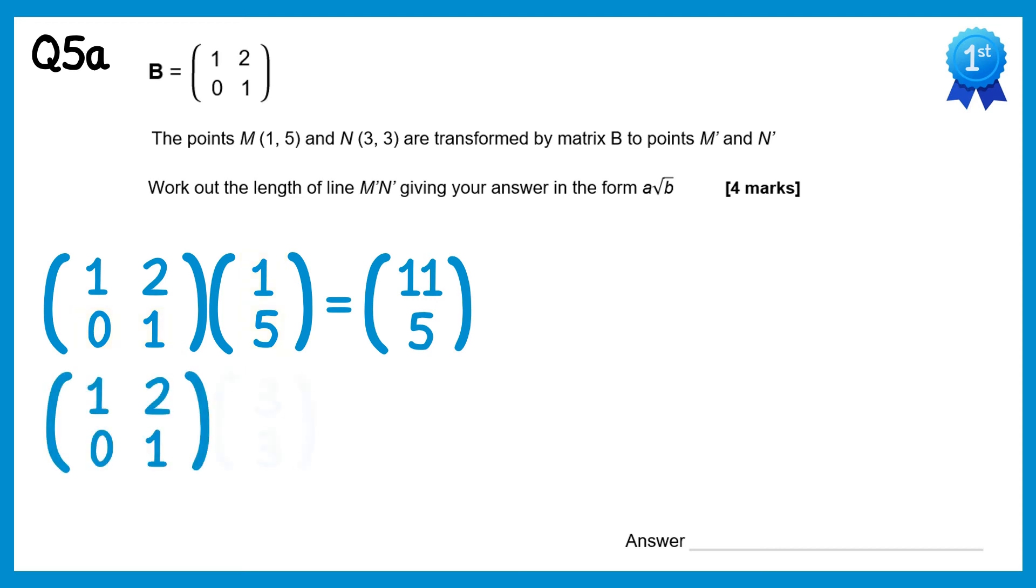We'll do the point N as well. So (1,2) with (3,3), which gets you 9, and (0,1) with (3,3), which gets you 3. So we found the images M dash and N dash. M dash is (11,5), and N dash is (9,3).